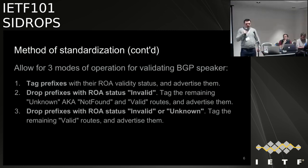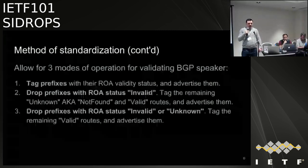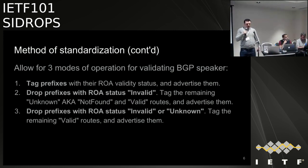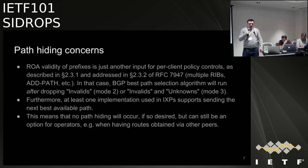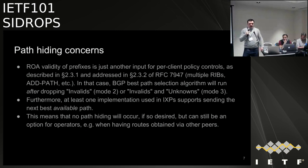We have described three modes of operation: the simplest one simply tags prefixes and sends them to peers — identical to how normal route servers operate, with the extra addition that prefixes are tagged according to their raw validity status. The second mode is to drop invalids and tag the rest. The third is drop invalids and unknown. If people filter out ROAs before BGP best path selection, everything works fine.